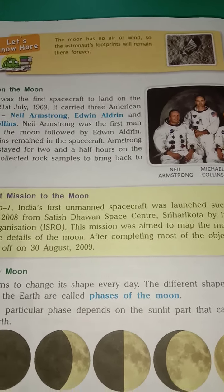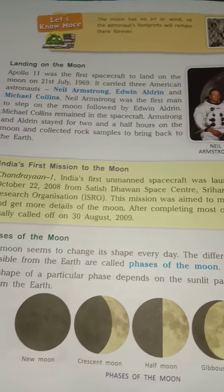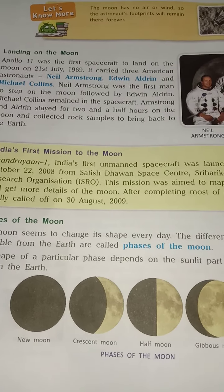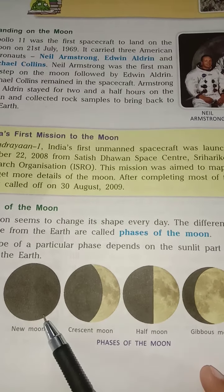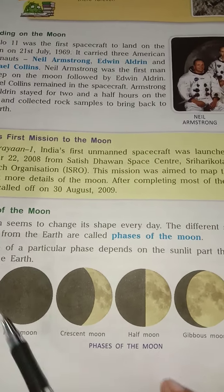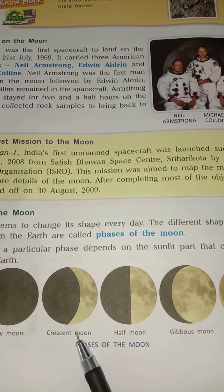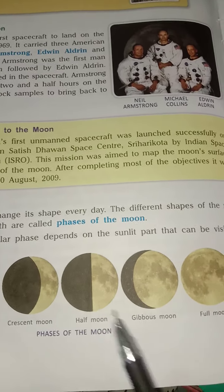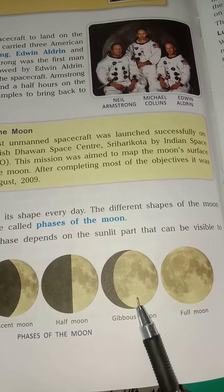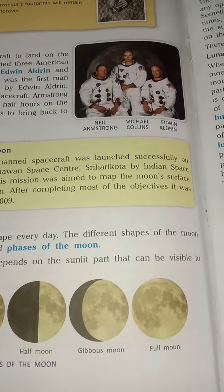There are many different phases of the Moon: new moon — we can't see the new moon — crescent moon, half moon, gibbous moon, and full moon. These are the different phases of the Moon.